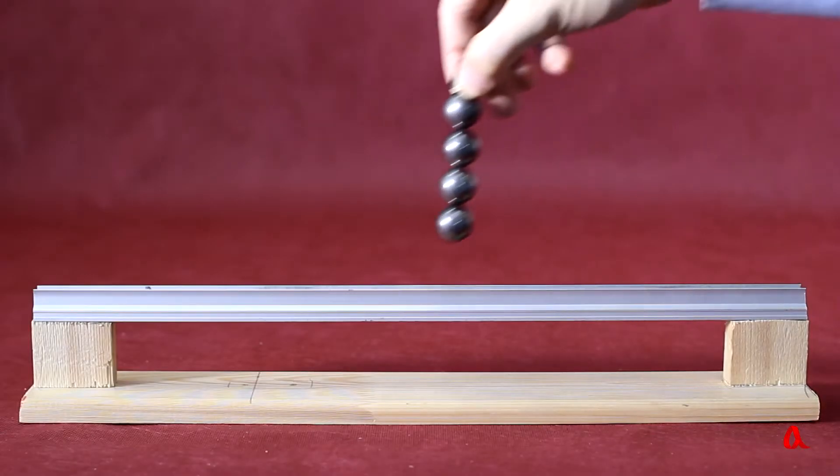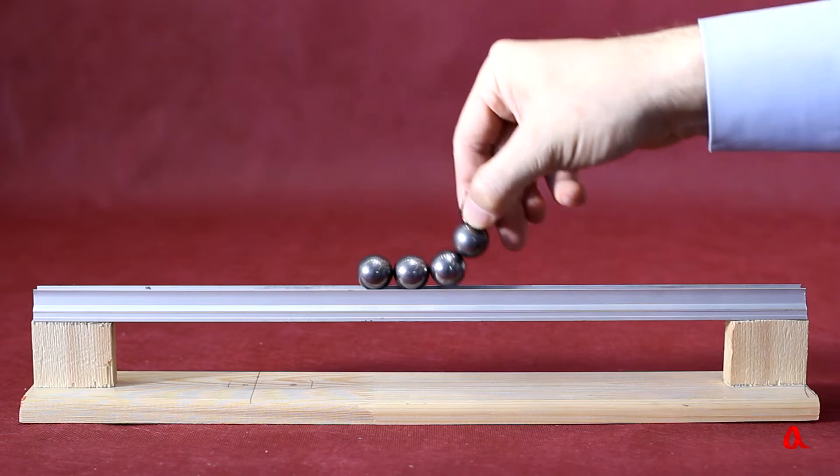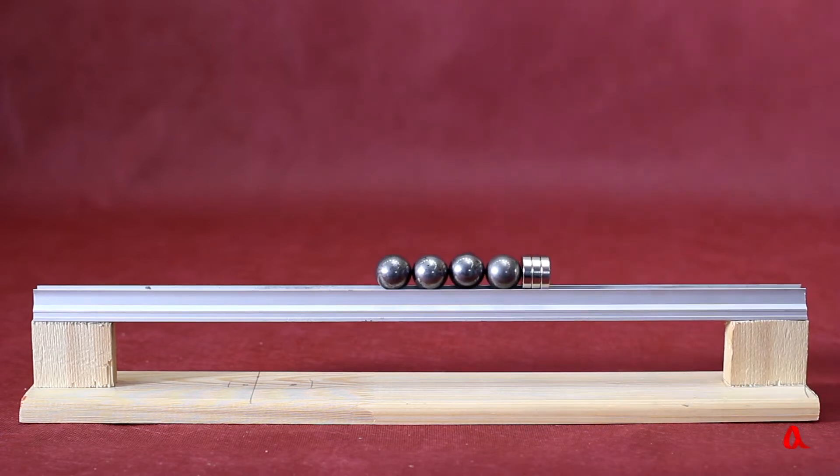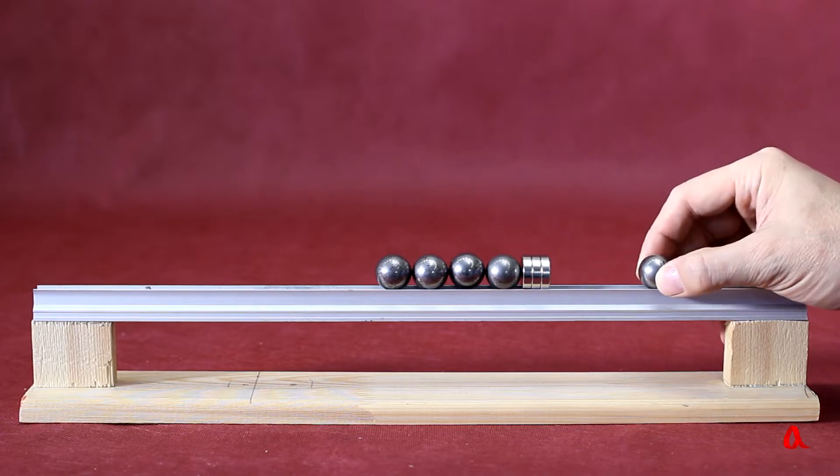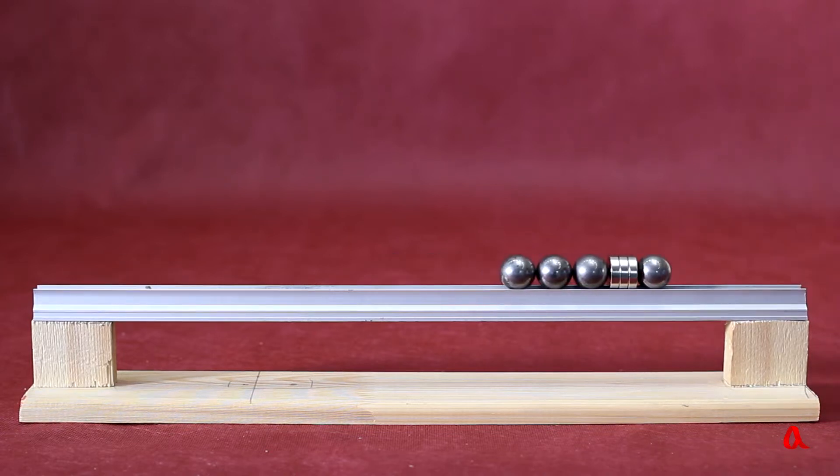Let's take a strong neodymium magnet and a few steel balls and put them one after another on a non-magnetic rail. Now let us move another ball close to the magnet and let it go. The uttermost ball at the other end of the chain bounces off with unexpectedly high speed.